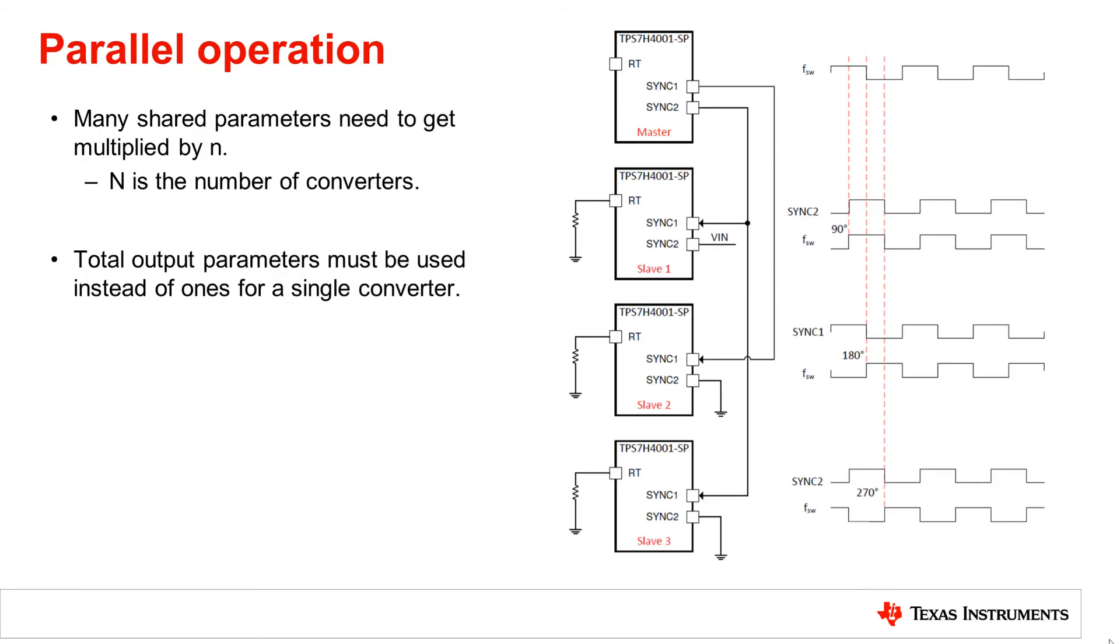This has been a quick overview of the changes to the datasheet equations in order to properly use them for paralleling multiple TPS7H4001-SPs.